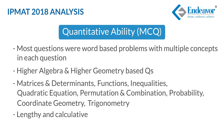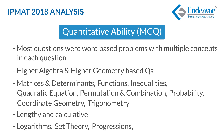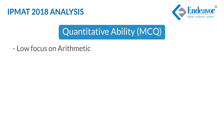Most questions were lengthy and calculative, though thankfully an online calculator was provided. There were around four to five questions from logarithms, set theory, progressions, geometry, and mensuration — almost all with word problems and multiple concepts combined. Surprisingly there were no questions on basic arithmetic, with only one question from profit and loss and one from time, speed, and distance. There was also a Data Interpretation set with four questions based on one table, covering percentages, ratio, and averages.